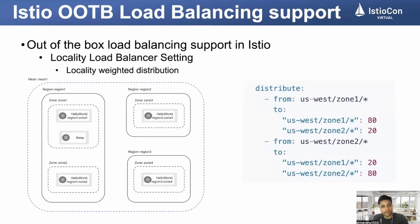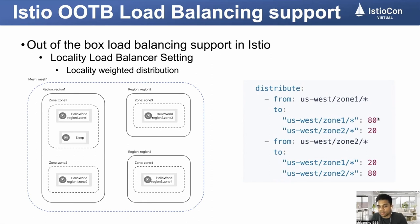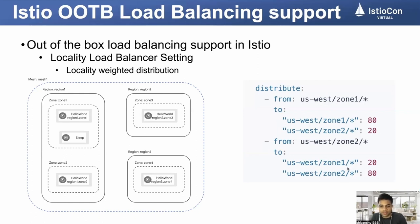Now let's talk about how locality load balancing settings can be configured. One way is to use weighted distribution — if I have a particular region US West and zone one, I can route traffic such that 80% stays in the same zone and 20% goes to different zones. Similarly, I can configure all traffic from zone two such that 80% remains in the same zone and 20% goes to another zone, such as zone one.